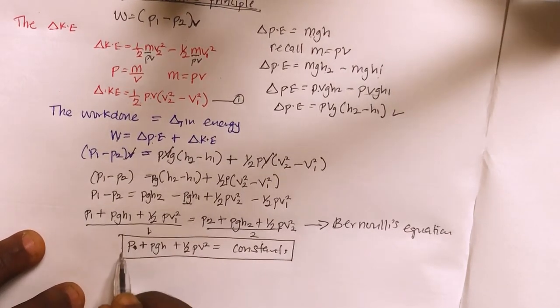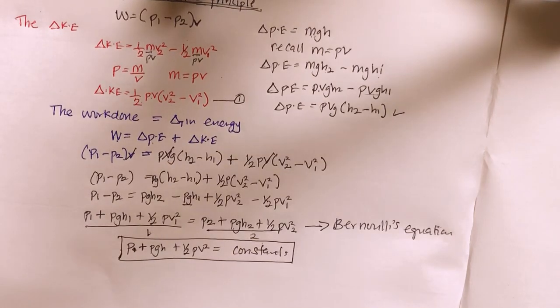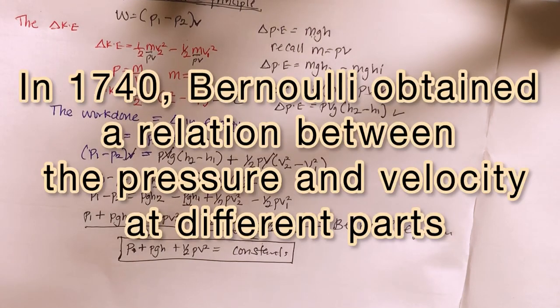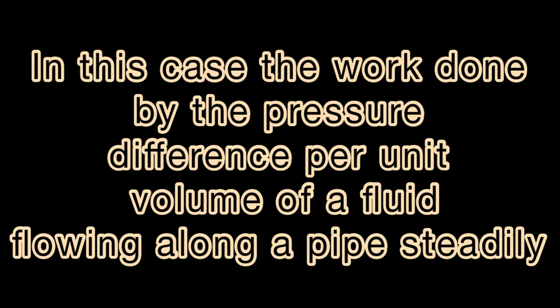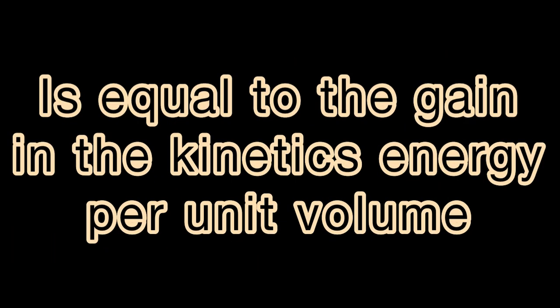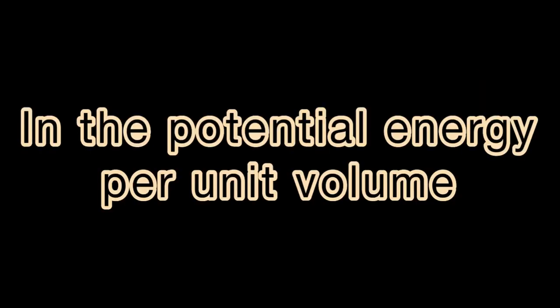Thanks for watching. In 1740, Bernoulli obtained a relation between the pressure and velocity at different parts of a moving incompressible fluid. If the viscosity of the fluid is negligible and there are no frictional forces to overcome, the work done by the pressure difference per unit volume of fluid flowing along the pipe is equal to the gain in kinetic energy per unit volume plus the gain in potential energy per unit volume.